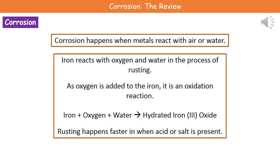There are certain conditions that will increase the rate at which rusting takes place. The first is if we've got acid present, such as acid rain. The second is if there's salt present, which is why people who live right by the seafront and park their cars there tend to see a faster rate of corrosion than people who don't live near the sea.